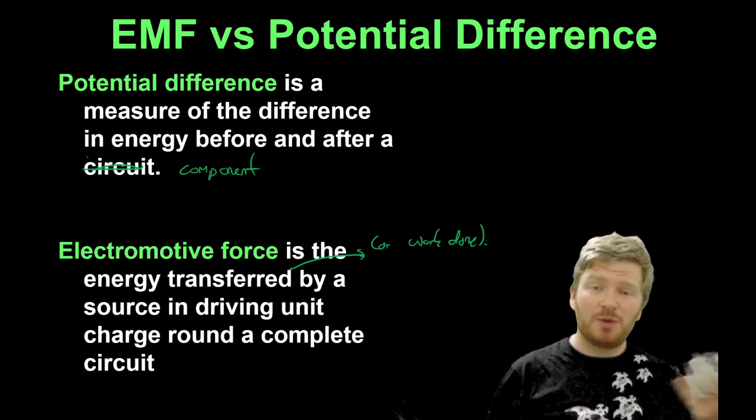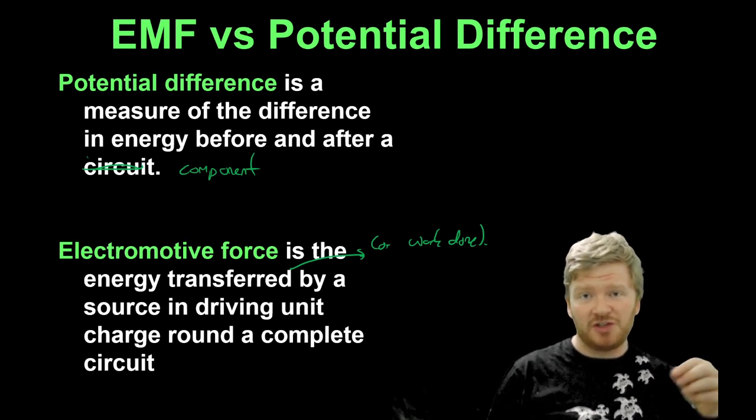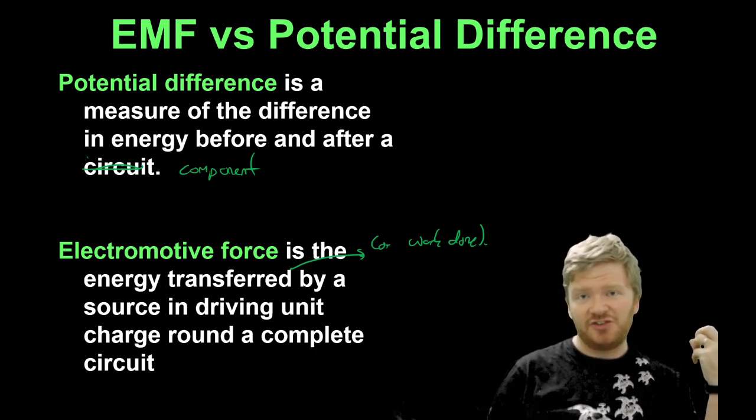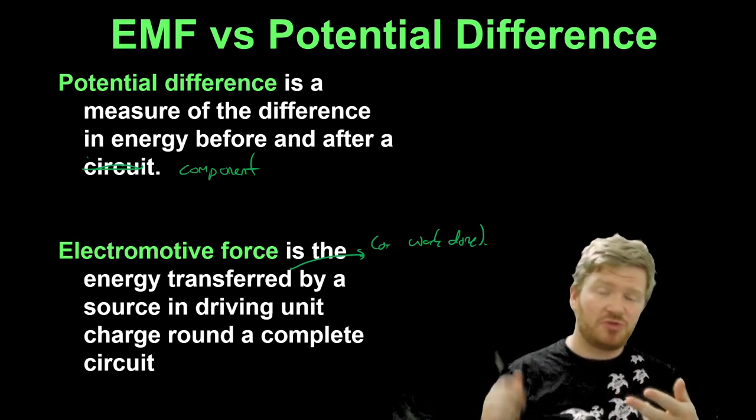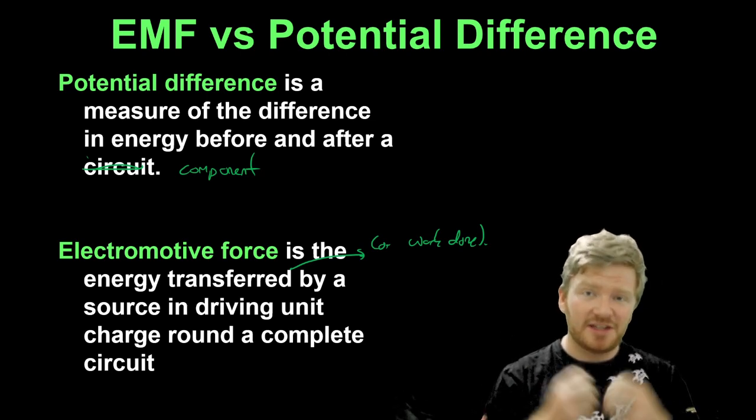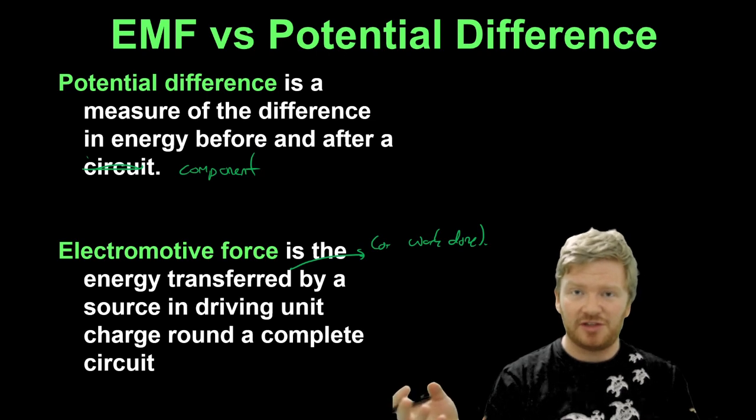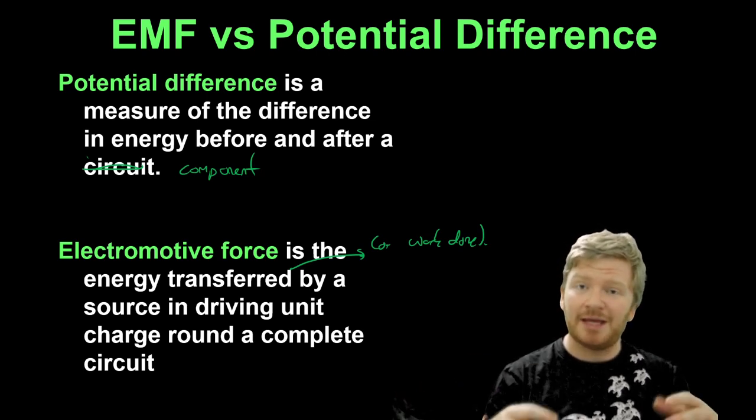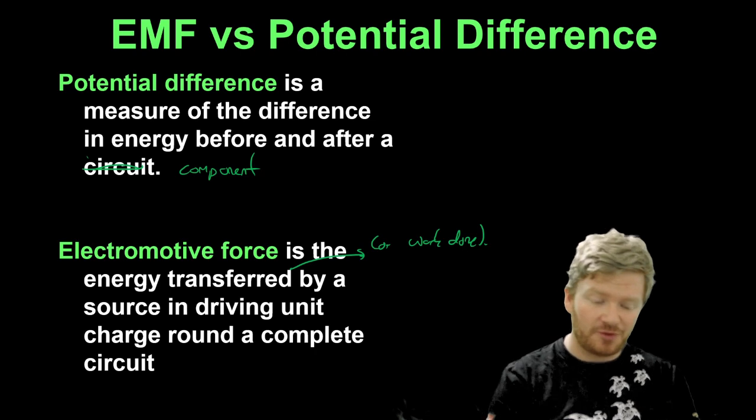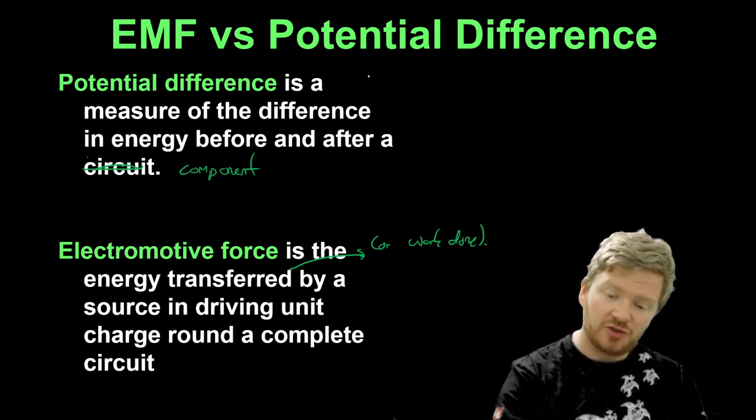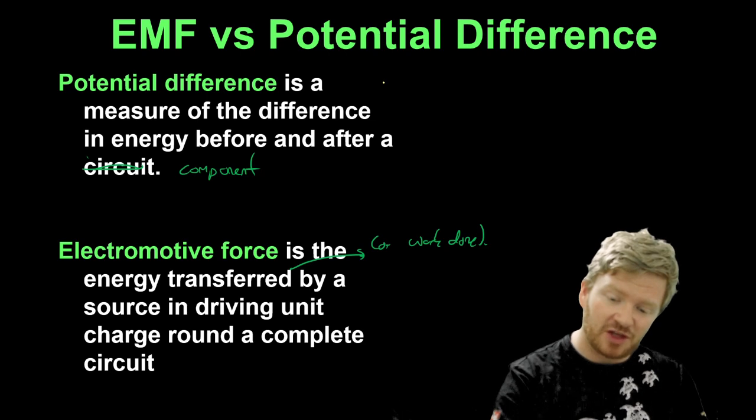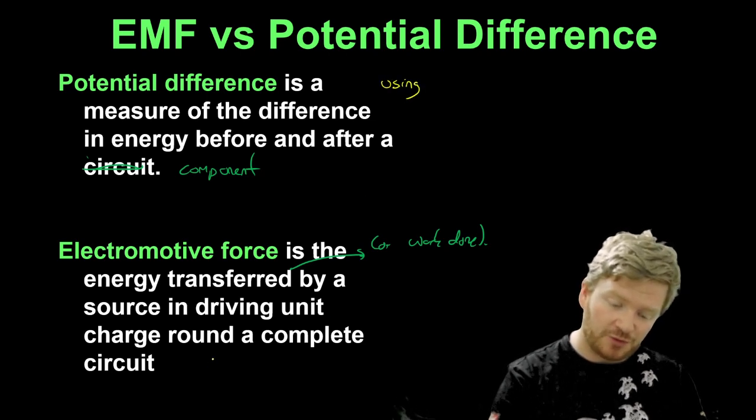Basically, you can generally think that when we hear the words voltage or potential difference, that's taking energy out of the circuit. So that would be things like resistors, lamps, diodes, anything that gives energy to its surroundings. Electromotive force, or EMF, that is something that is giving energy to the circuit. So potential difference is using up energy. Electromotive force is giving energy.